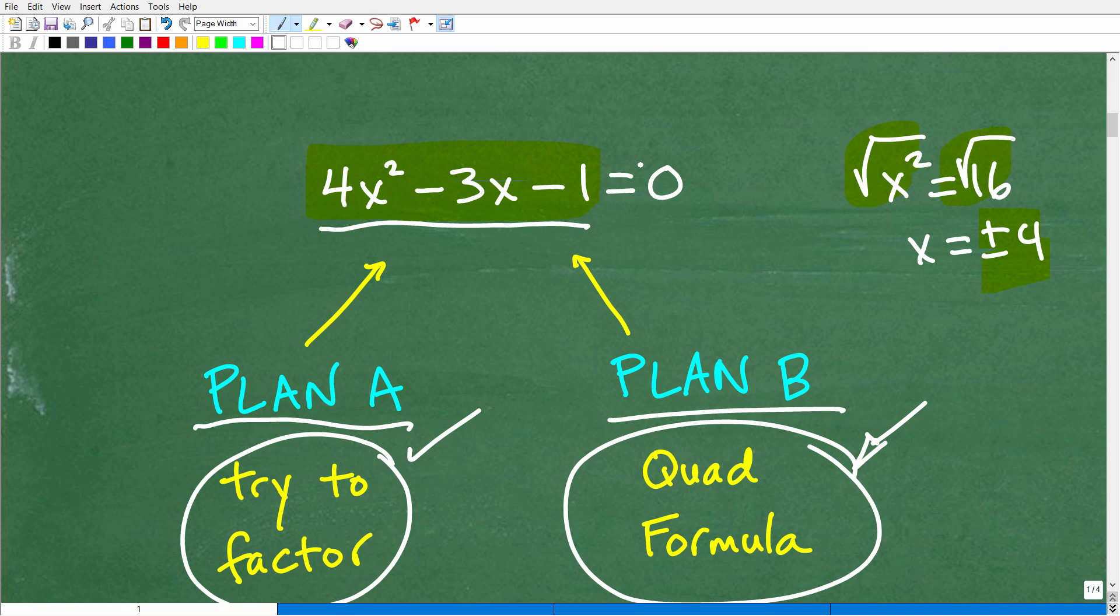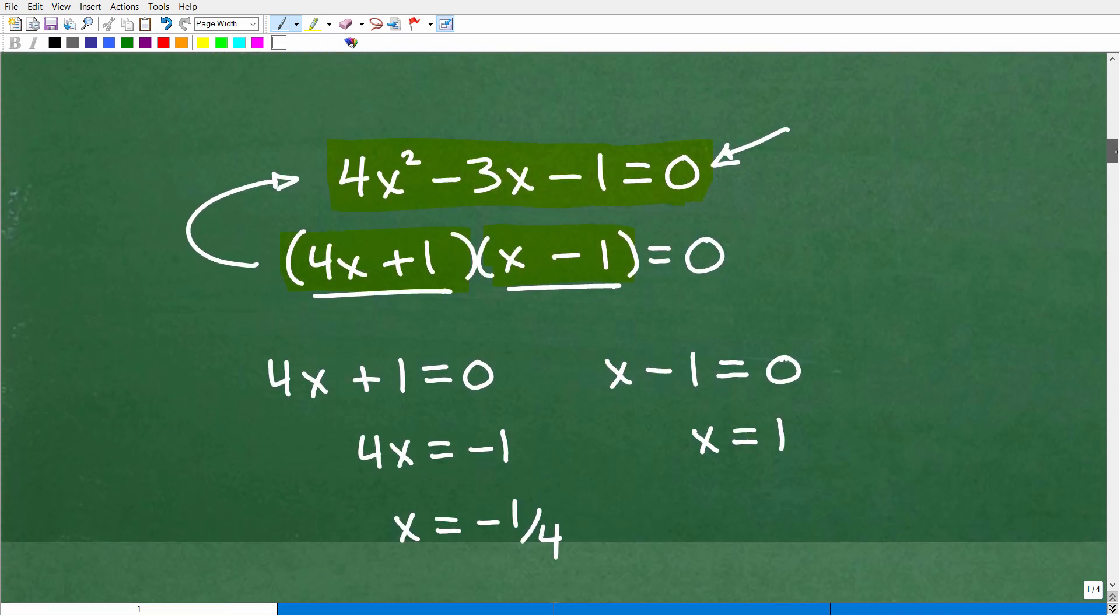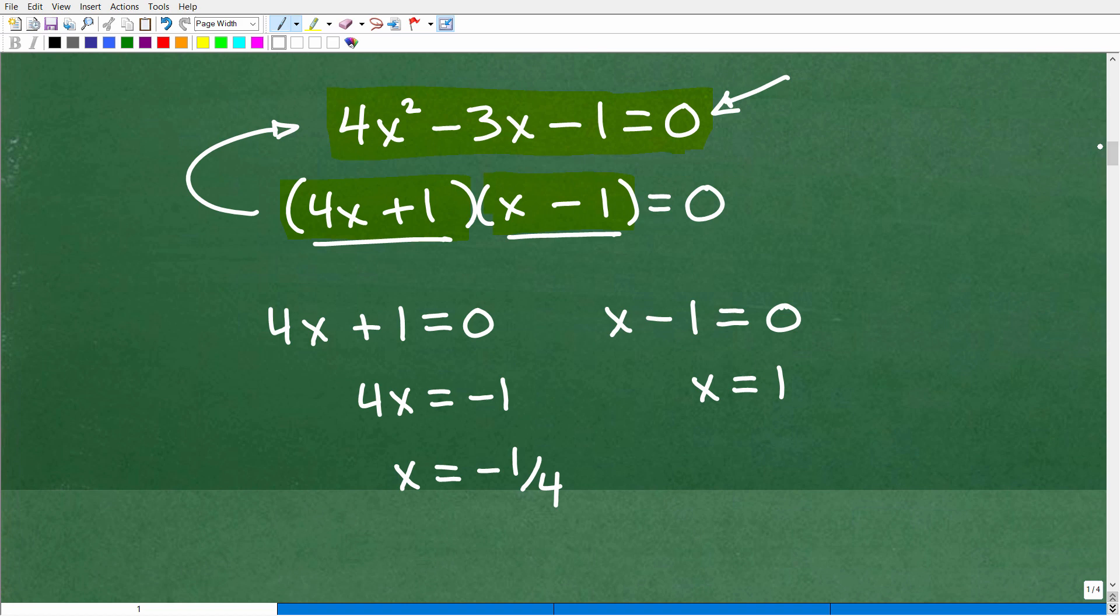So we want to have our quadratic equation written in highest to lowest power and equal to zero. If it's not currently equal to zero - let's say I had 4x squared minus 3x equals one - I got to scoot that one over and set this equal to zero. That is the first thing we need to do. Of course, this problem was already set up that way.